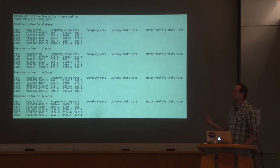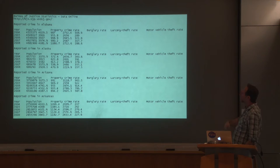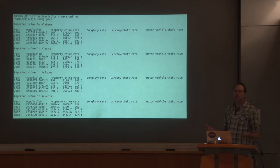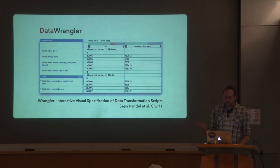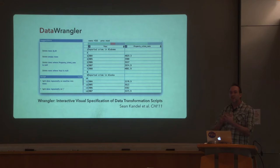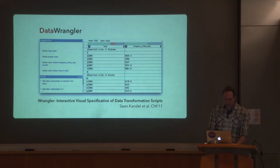Even relatively clean data exhibits this problem. Here's your tax dollars at work — this is from the Bureau of Justice Statistics, with various stats about housing crime across different years and different states. You can load this into Excel, no problem, but obviously this format is not well chosen for loading into R, a database, or a visualization tool like Tableau. So even relatively clean data can have severe formatting issues. Recognizing this problem, a number of us — led by my former PhD student Sean Kandel — looked at different ways to turn what is normally a coding process into something much more visual and interactive. One of our first projects in this line of work was a tool called Data Wrangler.